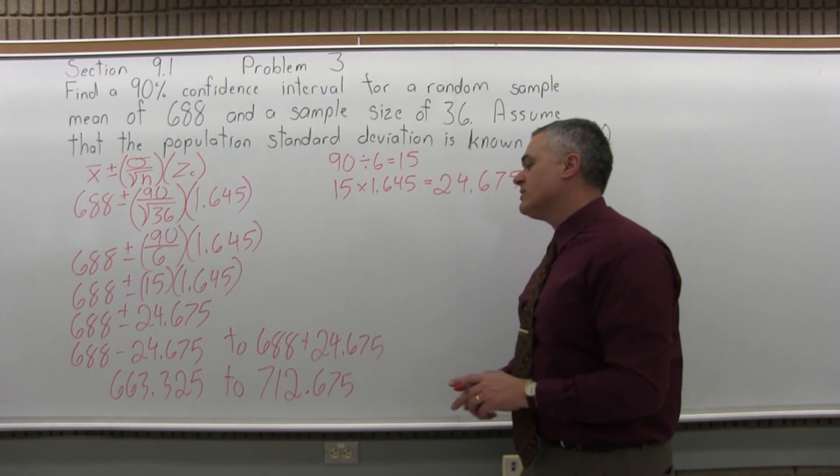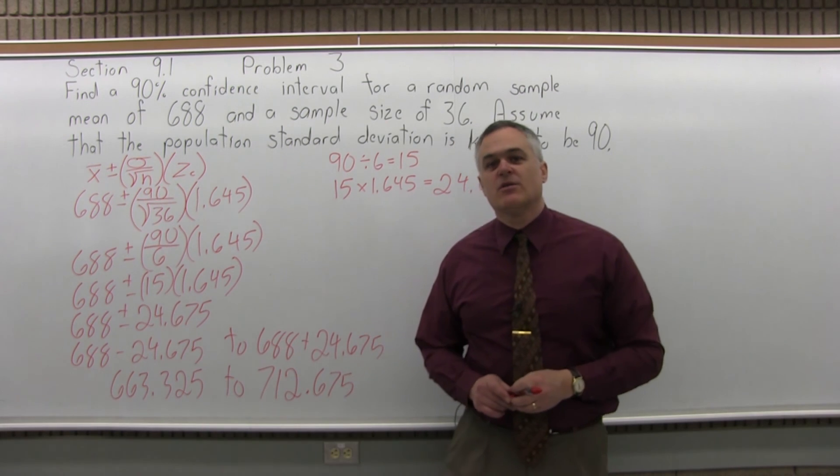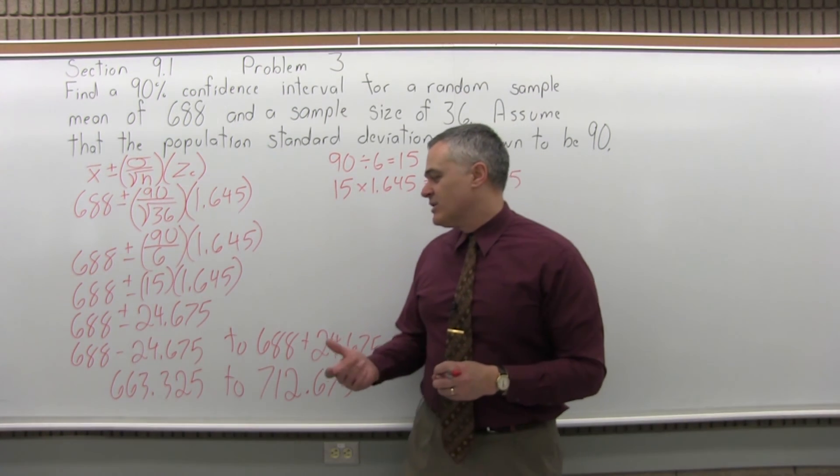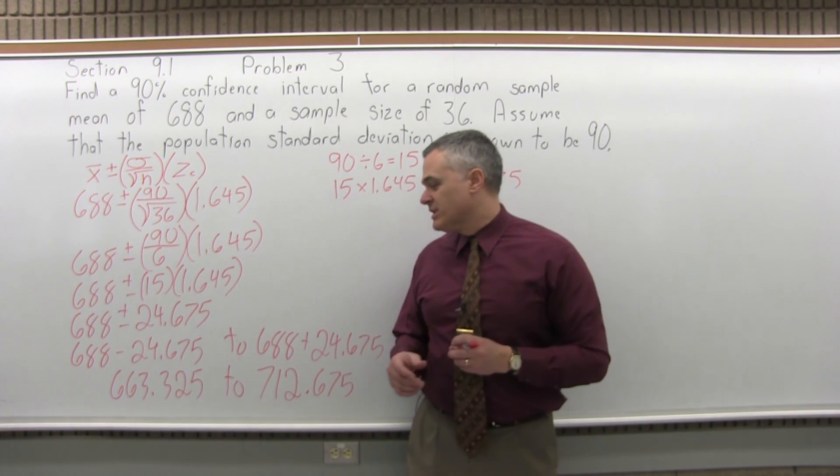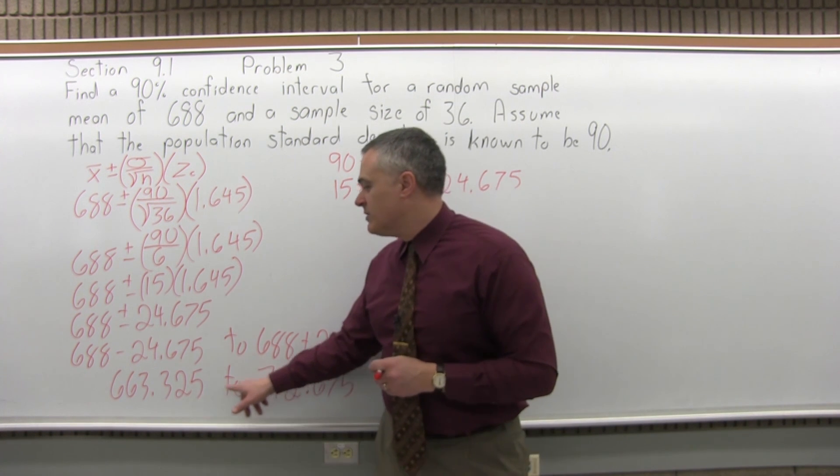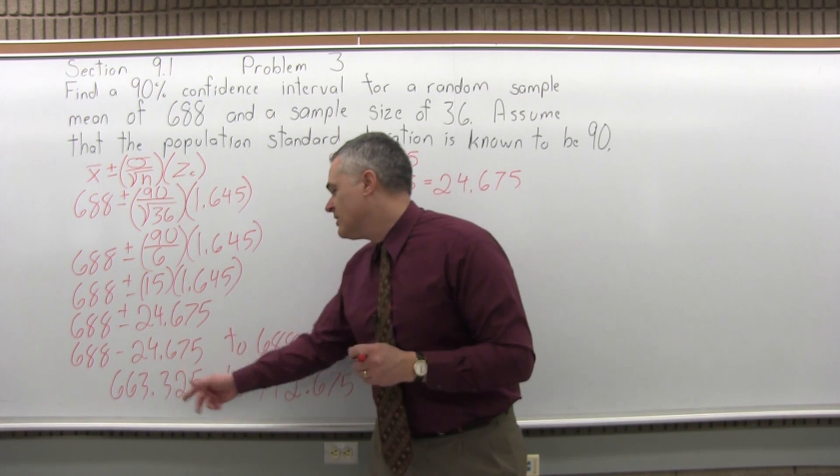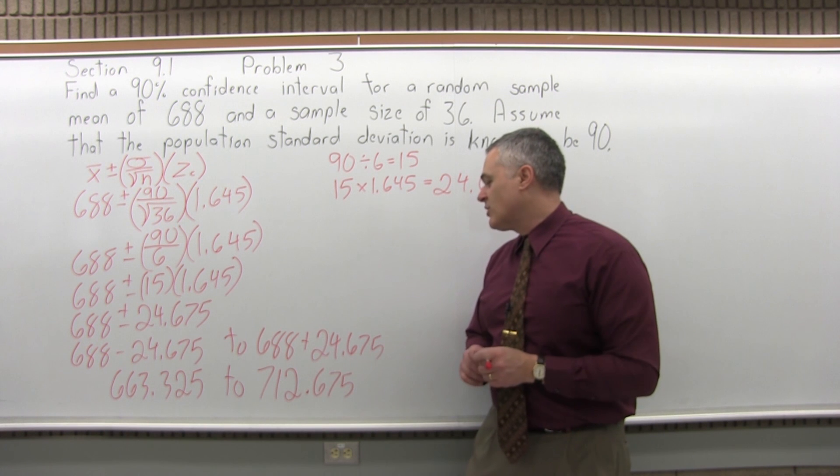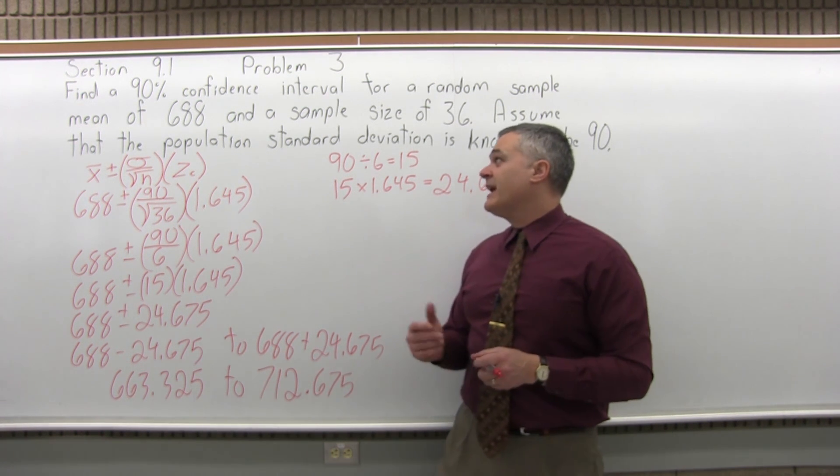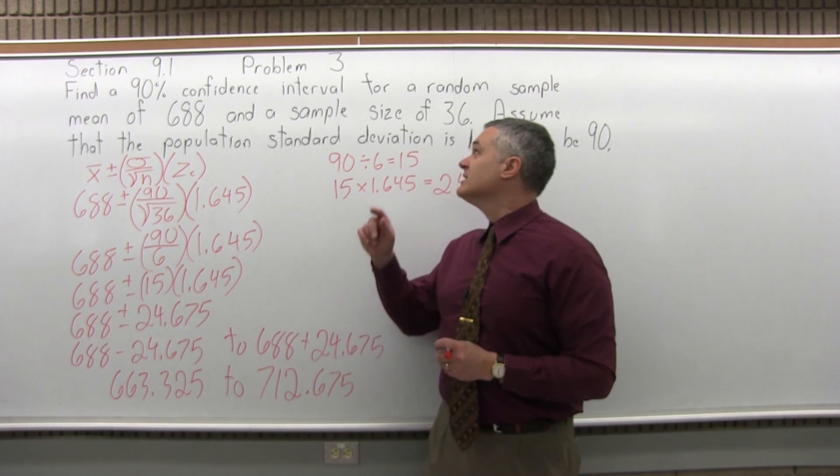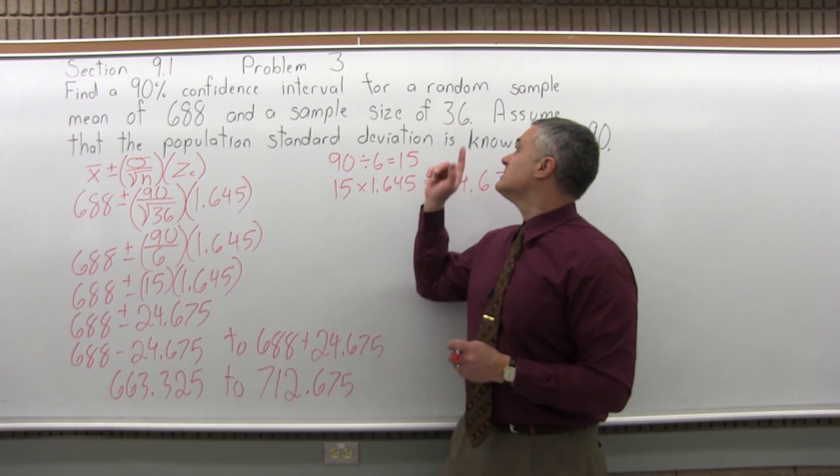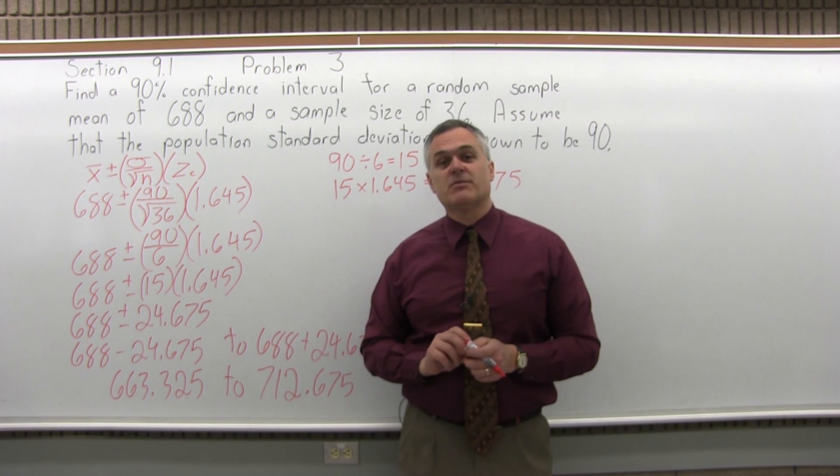So we know that if we did examine the entire population and found the true mean of the entire population, the population mean, it's very likely that it would be between 663.325 and 712.675. And that information is based only on a single sample of 36 items, which is a pretty powerful type of math.